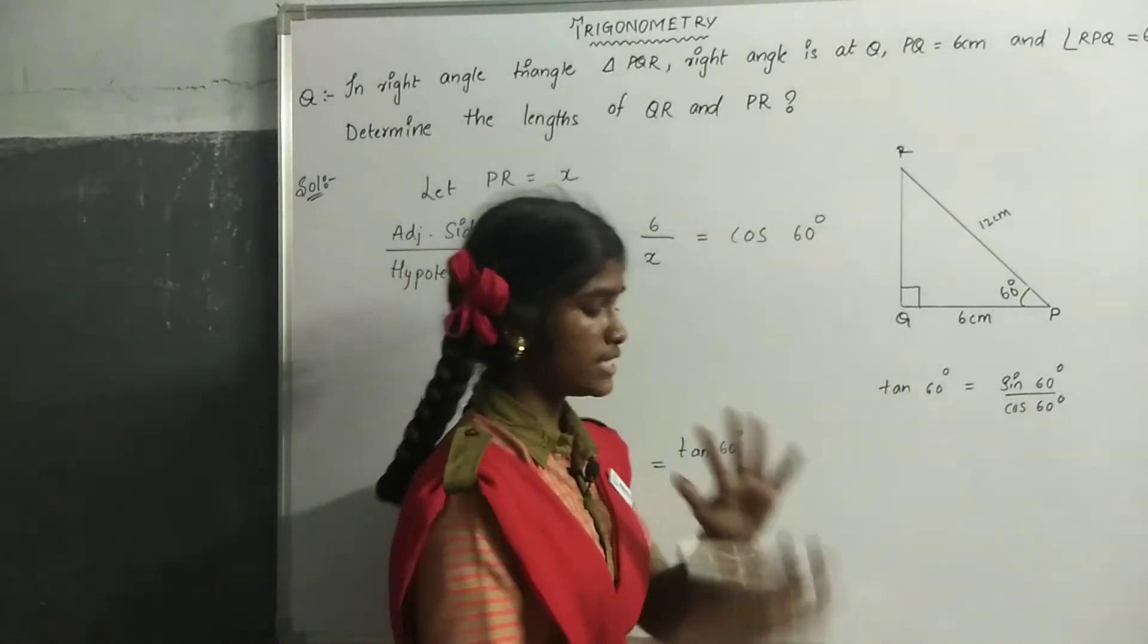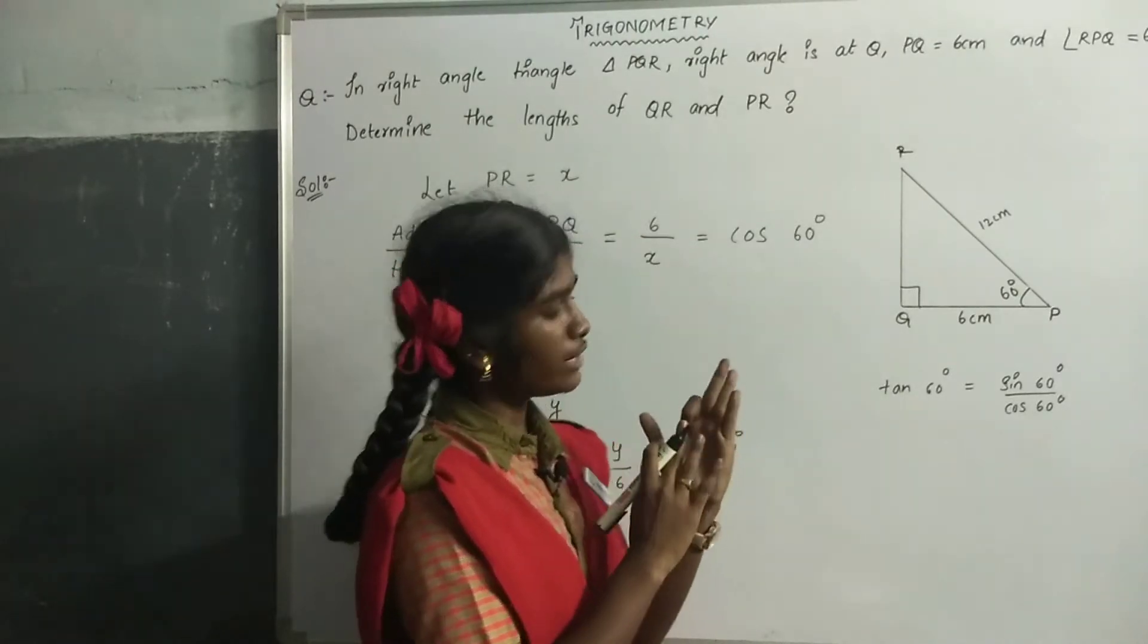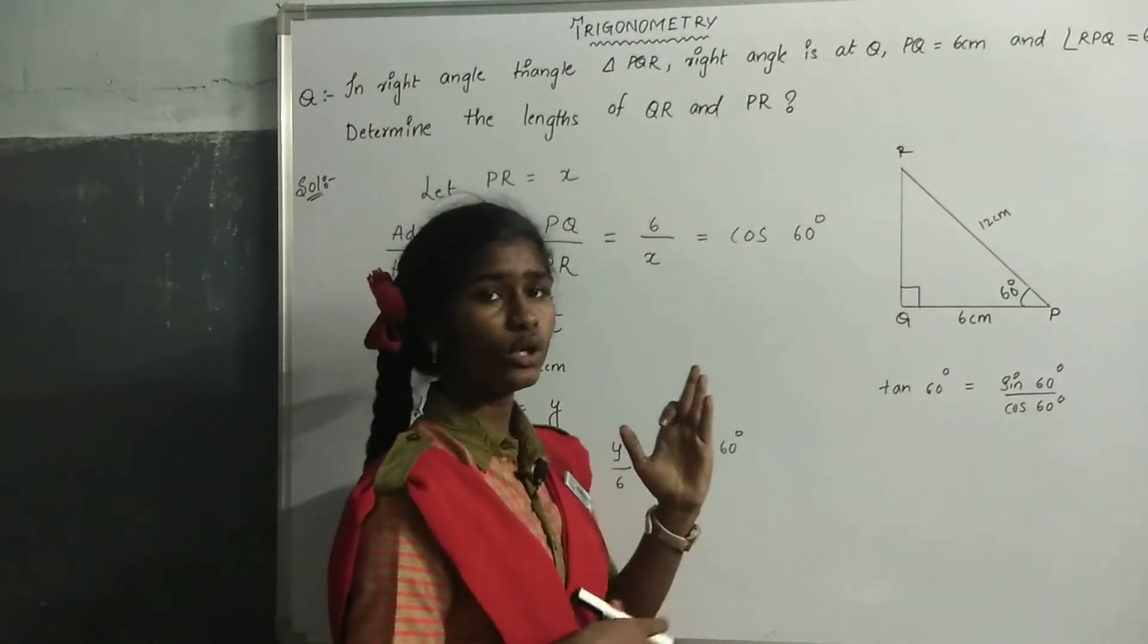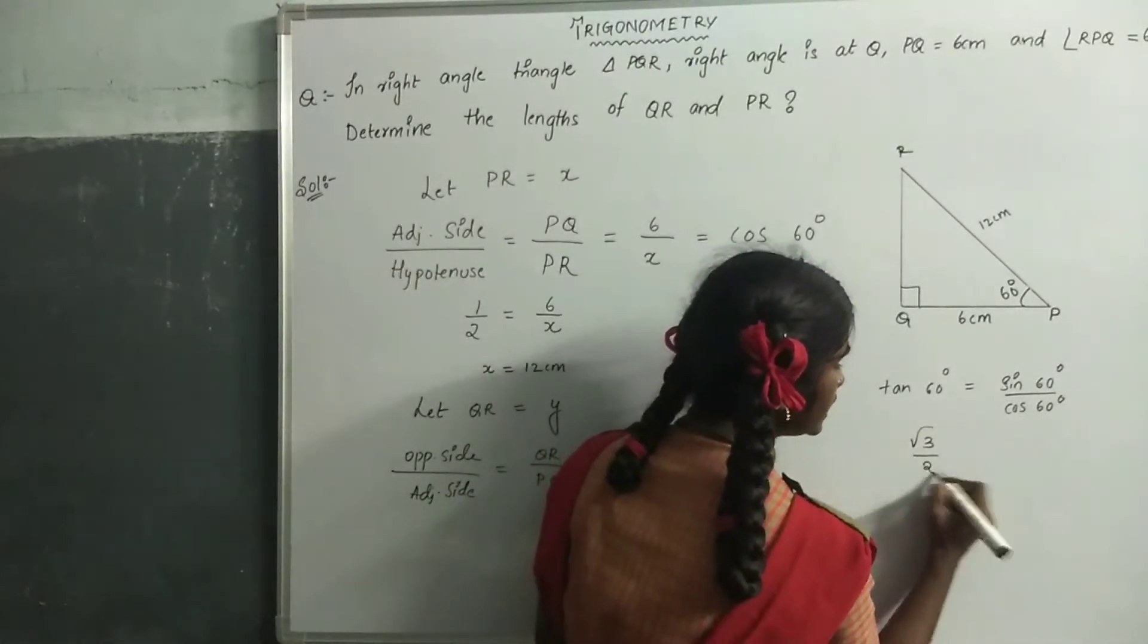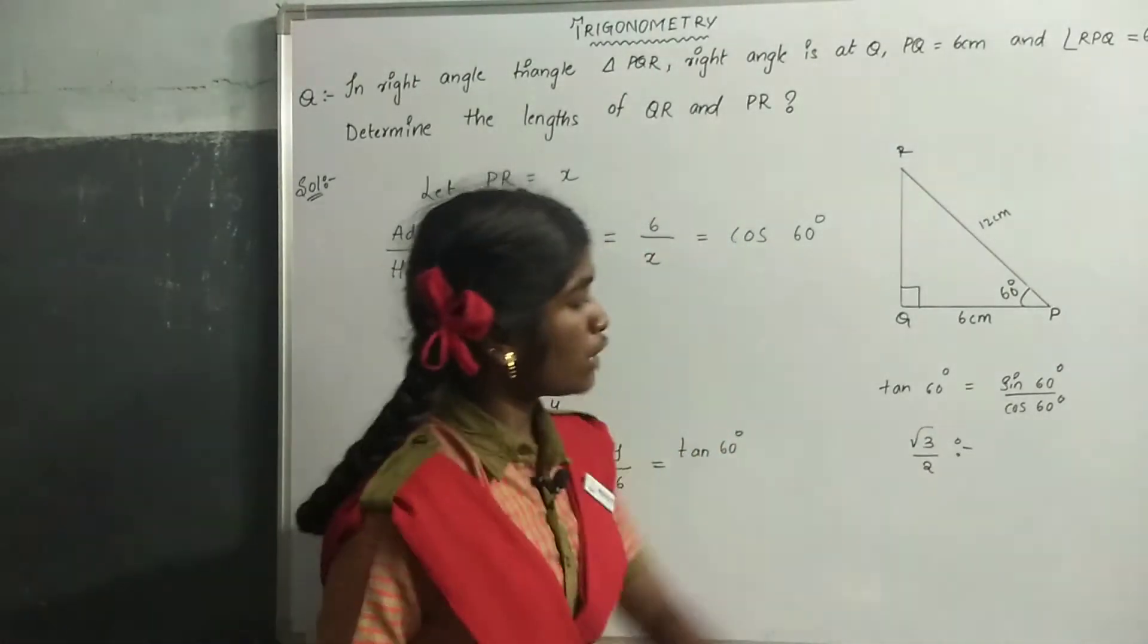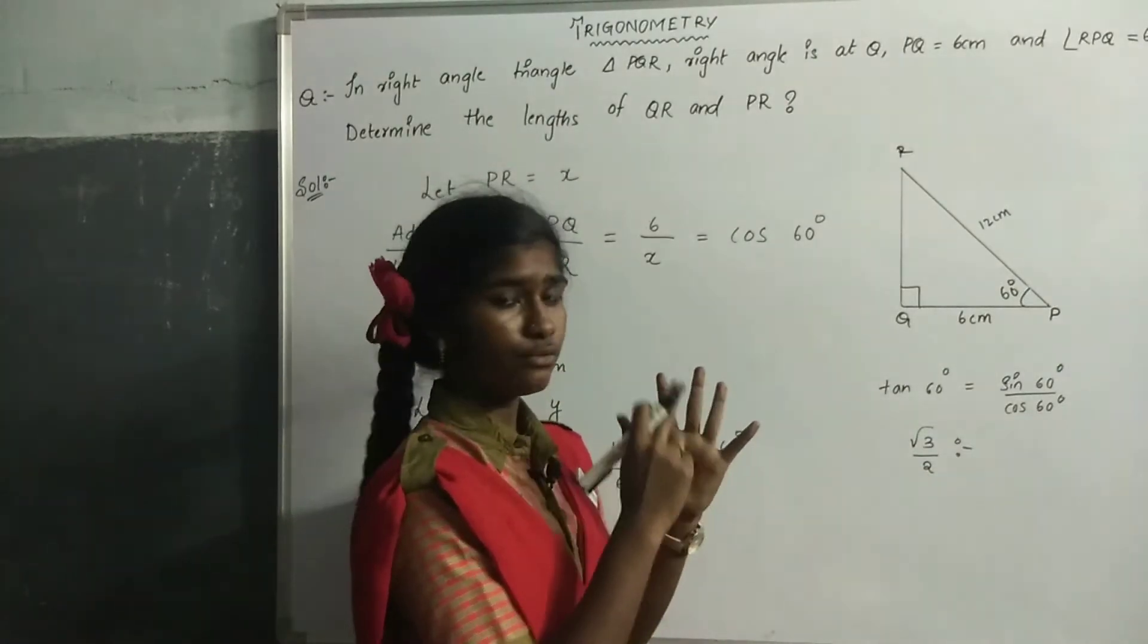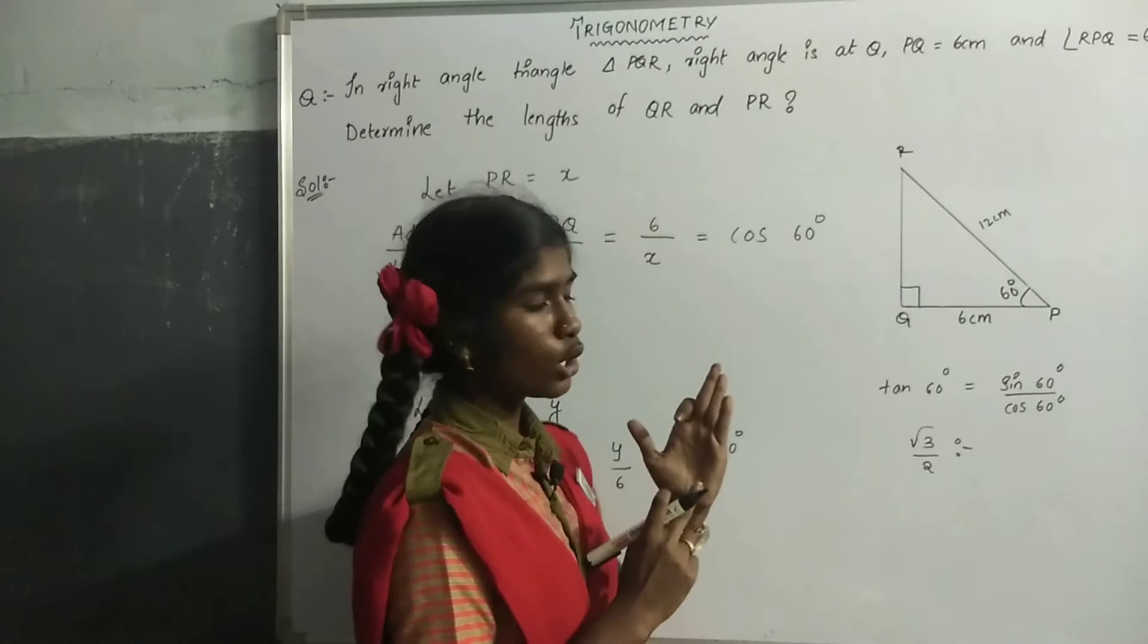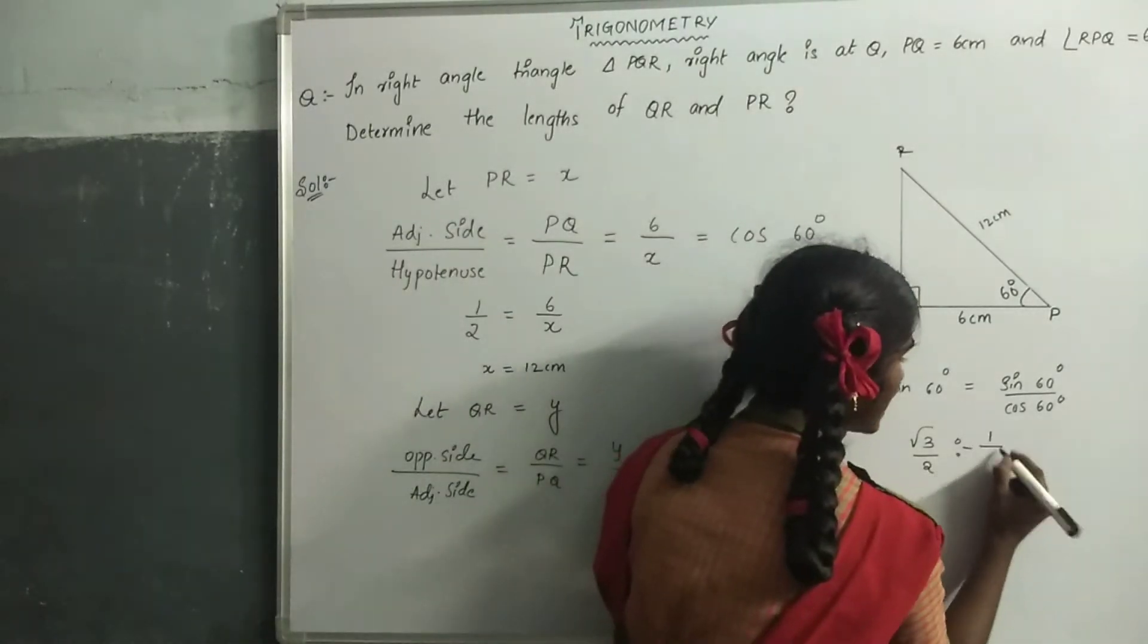For sin 60: 0, 30, 45, 60 degrees. For sin, go clockwise, so root 3 by 2. For cos 60: 0, 30, 45, 60 degrees. For cos, go anticlockwise, so 1 by 2.